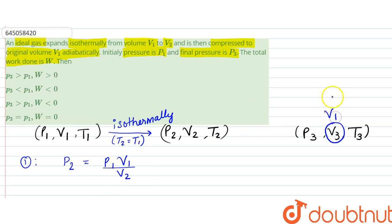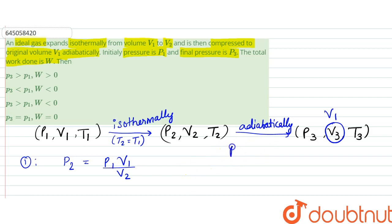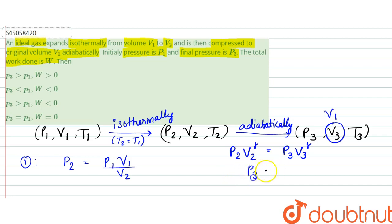Since v3 is equal to v1, we are going back to the same state, and we are going adiabatically. For the adiabatic process, p2·v2^γ = p3·v3^γ. Since v3 = v1, we can write p3 = p2·v2^γ / v1^γ.